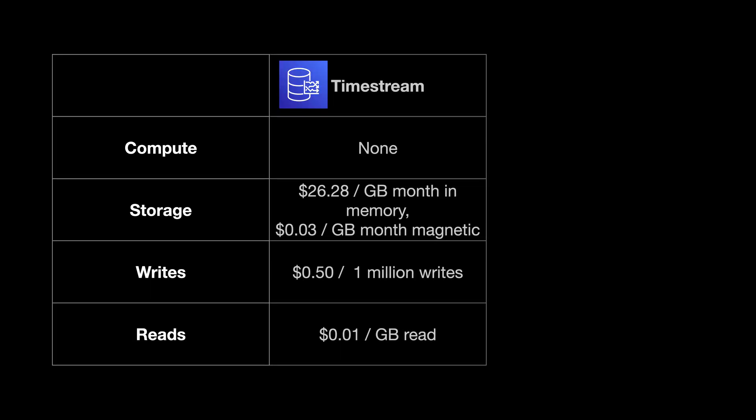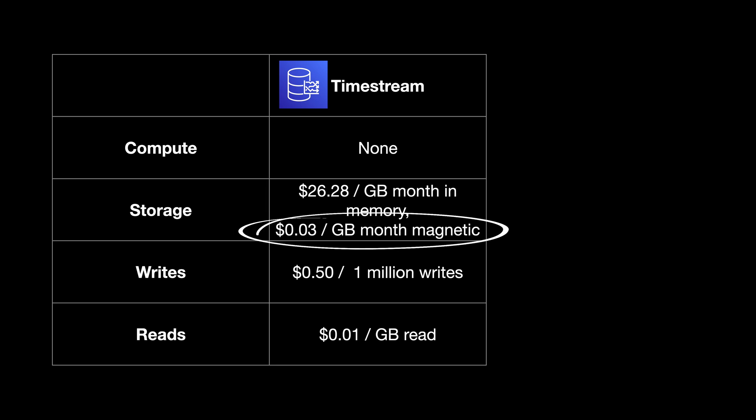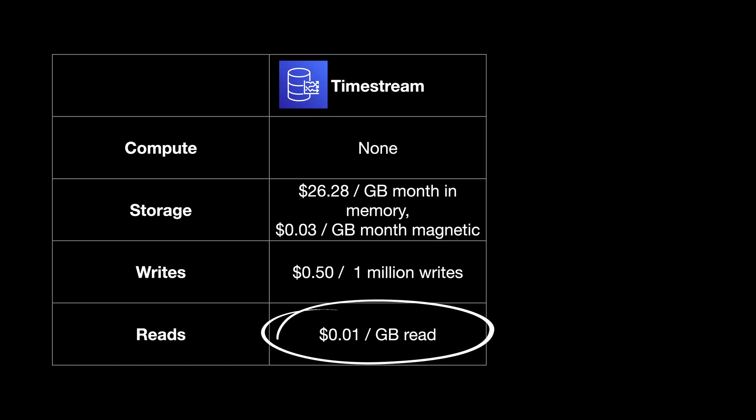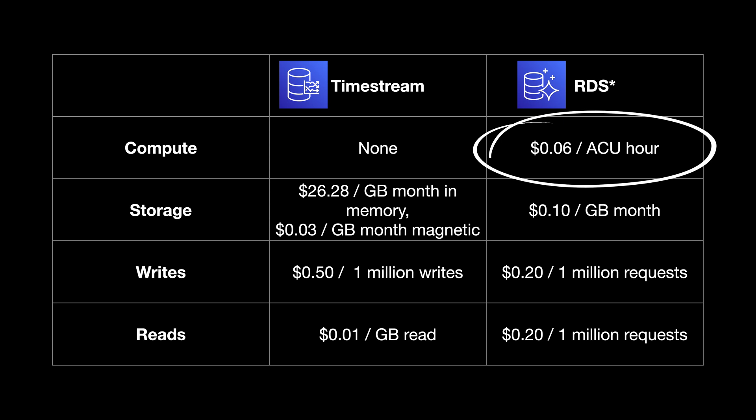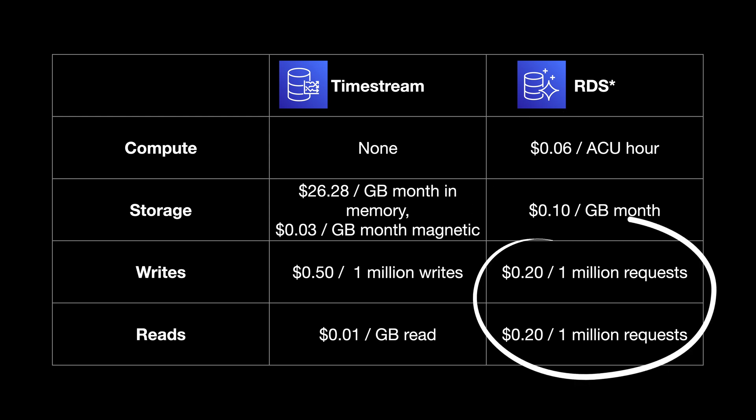Now let's look at the cost of Timestream as compared to RDS. In the US West 2 region, for Timestream, you'll pay 50 cents per 1 million writes, 3.6 cents per gigabyte hour for data in the in-memory data store, and 3 cents per gigabyte month for data in the magnetic store. Queries are one cent per gigabyte scanned. RDS has a ton of different factors that affect price, but we'll compare to the Aurora PostgreSQL serverless flavor. For that, you'll pay 6 cents per ACU hour — an ACU is basically a unit of compute capacity — 10 cents per gigabyte month for storage, and 20 cents per million requests. On the surface, it does seem like if you can keep your Timestream in-memory storage size relatively small, Timestream can offer substantial savings over an equivalent RDS serverless setup. If you need to have several gigabytes of data in the in-memory store window, the savings may evaporate quickly though. Note that all these prices are from the time this video was made in 2021, so things may have changed.